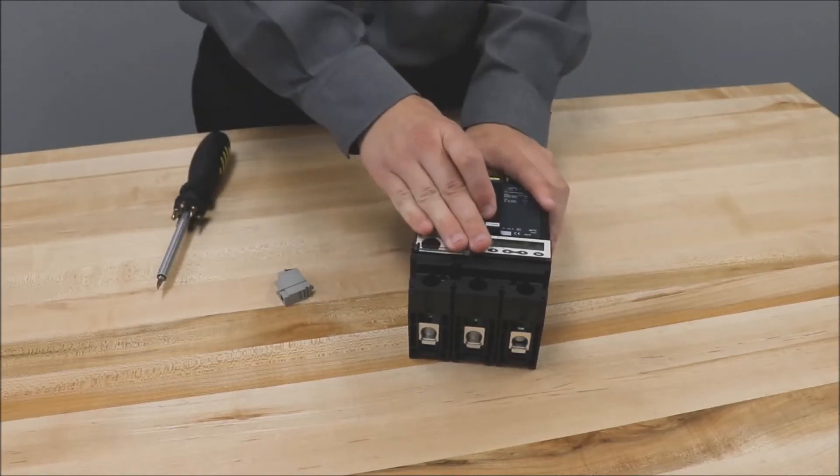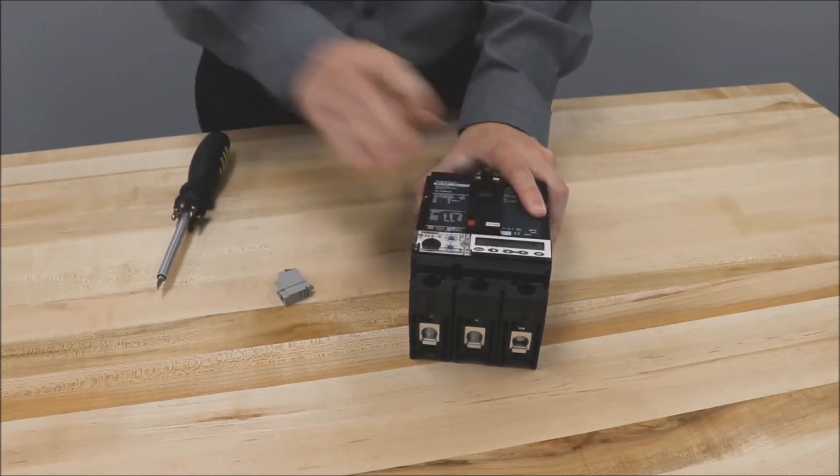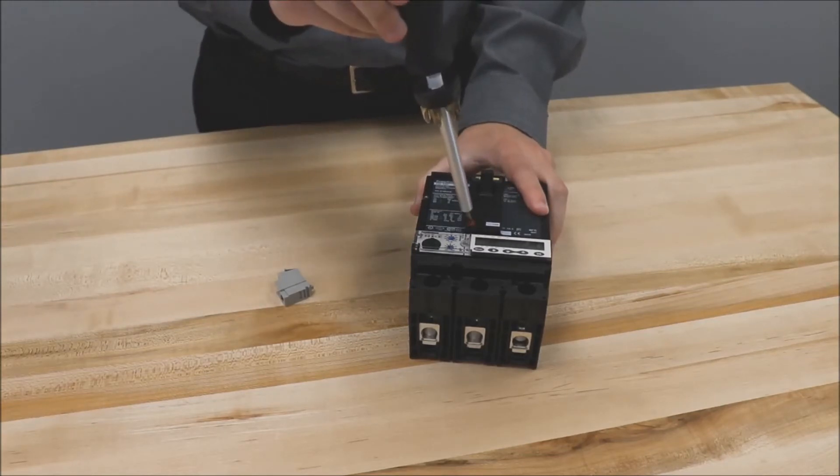First you'll need to place the breaker in the trip position by turning it on and then pressing the push to trip button.